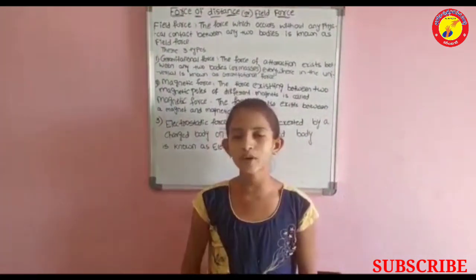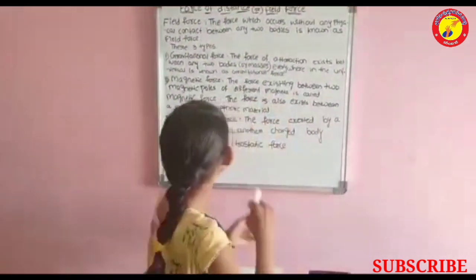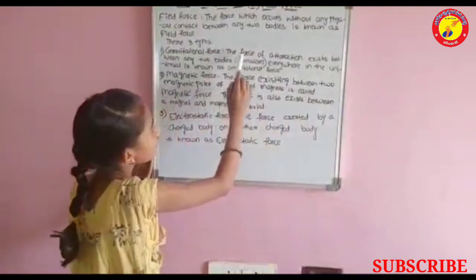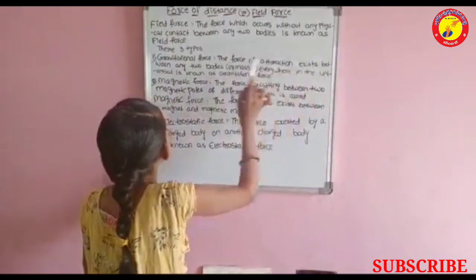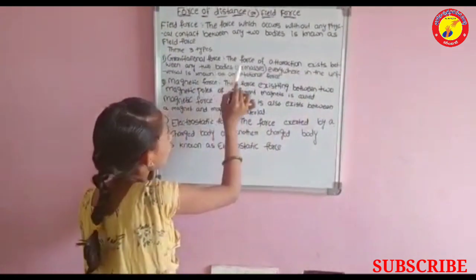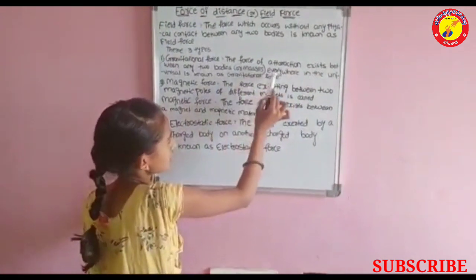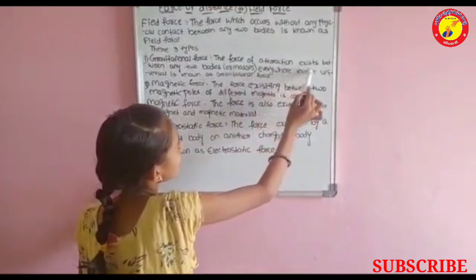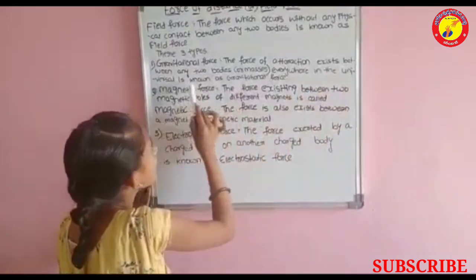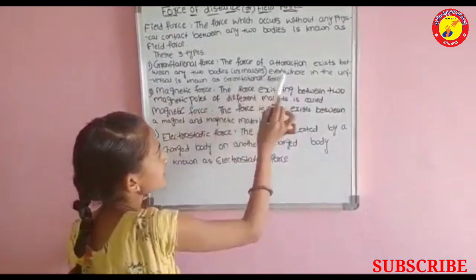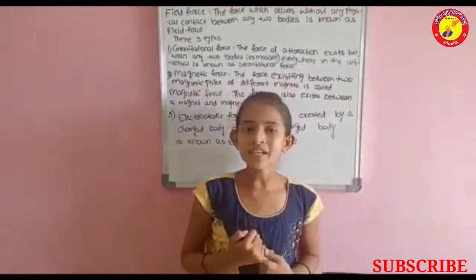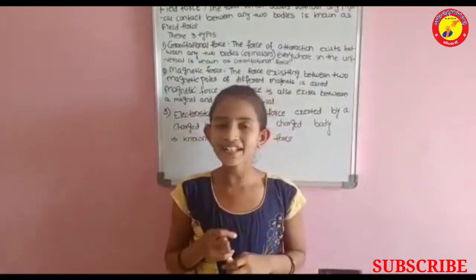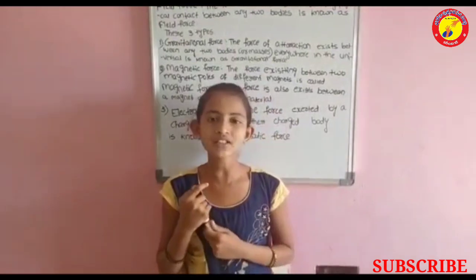Now let us learn about the gravitational force. The force of attraction that exists between any two bodies or masses everywhere in the universe is known as gravitational force. Masses means the planets. Universal means world.